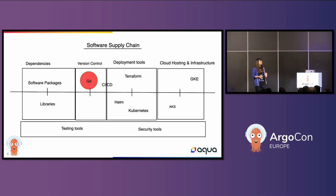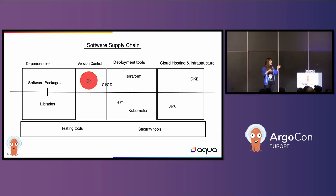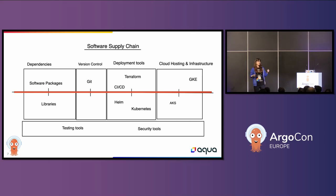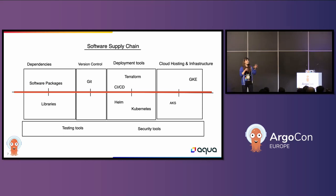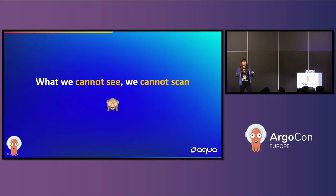When we talk about our software supply chain — the different components that go into our application stack — Git is one of those tools. If you're using GitOps, our goal is to apply GitOps best practices across our entire tooling and ideally identify all of the libraries, packages, and different tools — everything we're defining — to ultimately commit to Git, keep it version-controlled, and make it observable. Because what we cannot see, we cannot scan. That's something GitOps really helps us with — it pushes us towards making our tooling and applications more observable and trackable so we can scan those resources.